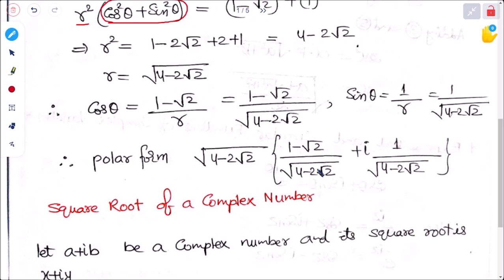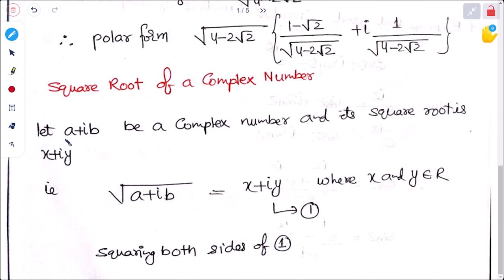Next is the square root of a complex number. Let a plus ib be a complex number and its square root is given by x plus iy. So we can write: root over (a plus ib) equals x plus iy, where x and y are real numbers. Now squaring both sides — on the left the root is removed, giving a plus ib, and on the right we expand (x plus iy) squared.